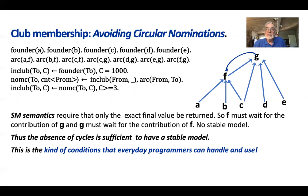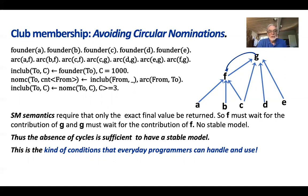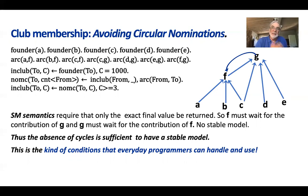When there is no cycle, then we have a stable model. The absence of a cycle is a simple enough condition that every programmer — even every undergraduate student — can understand and cope with. They can leverage the guarantee of stable model semantics without really knowing what it is, because the absence of cycles guarantees stable model semantics.